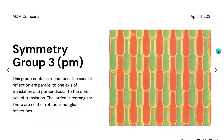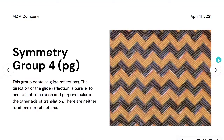Symmetry group three is named PM. This group contains reflections. The axes of reflections are parallel to one axis of translation and perpendicular to the other. The lattice is rectangular. There are neither rotations nor glide reflections.